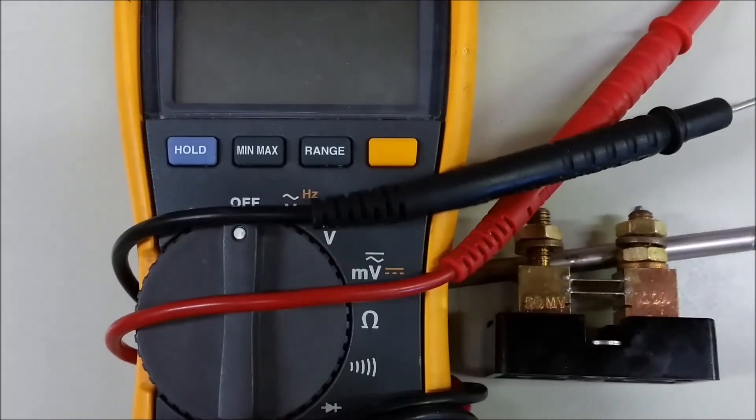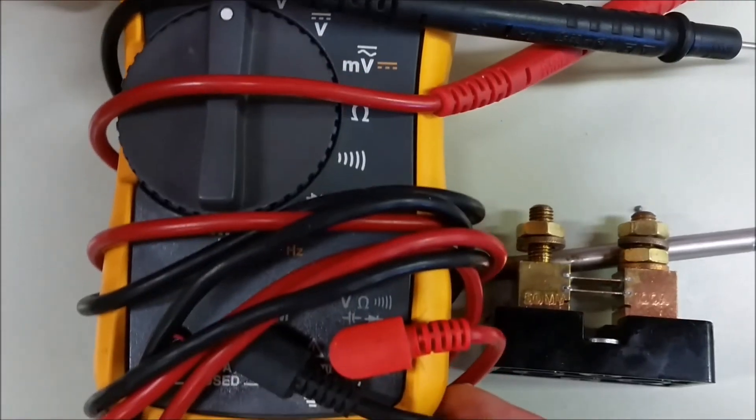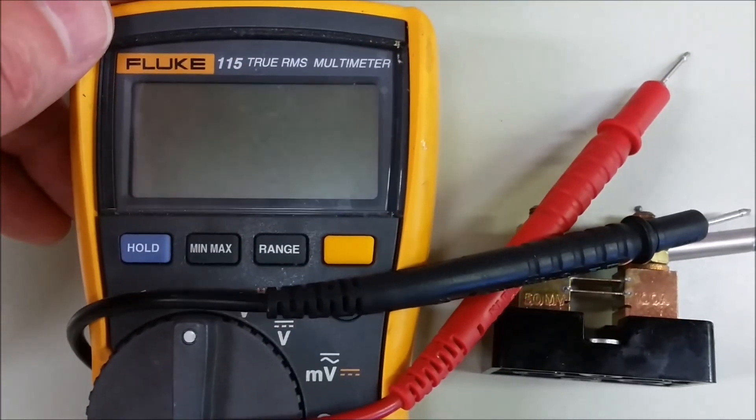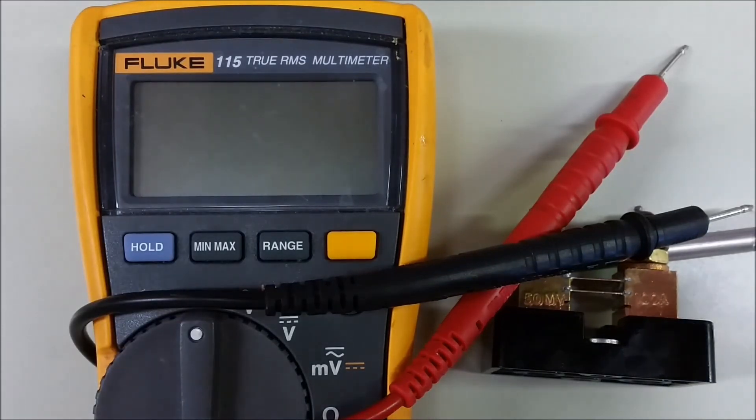One of the ways to measure short circuit current is either using a meter like this, and I think its max is 10 amps, if I remember right, or to use a short circuit, which most people don't have.